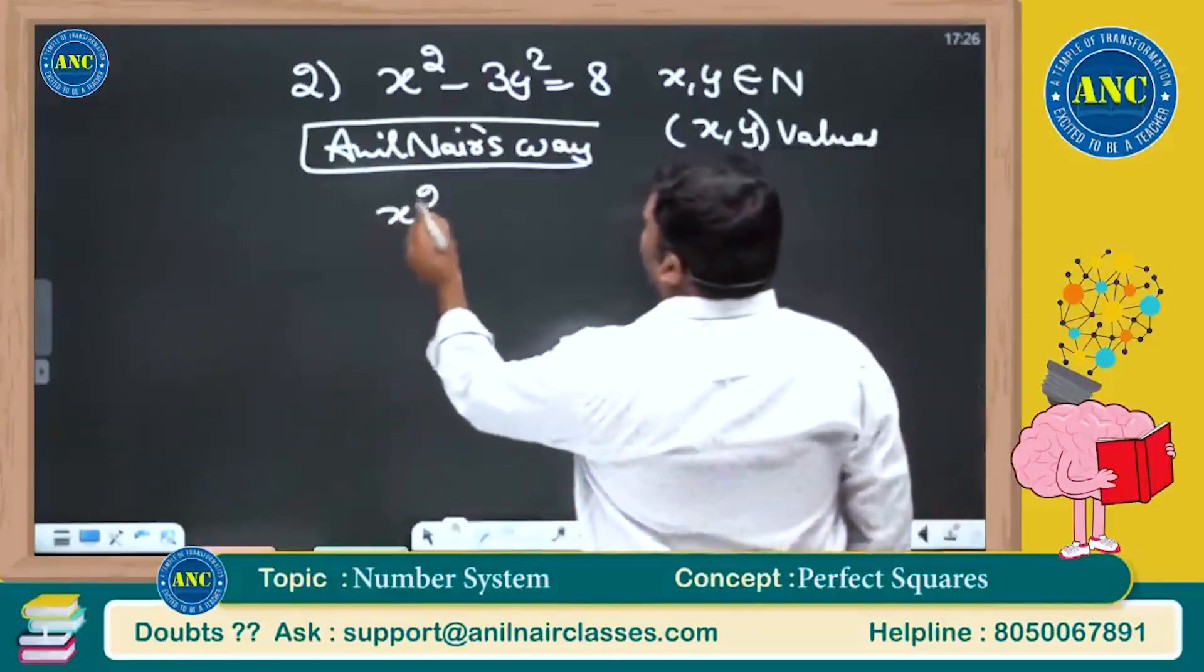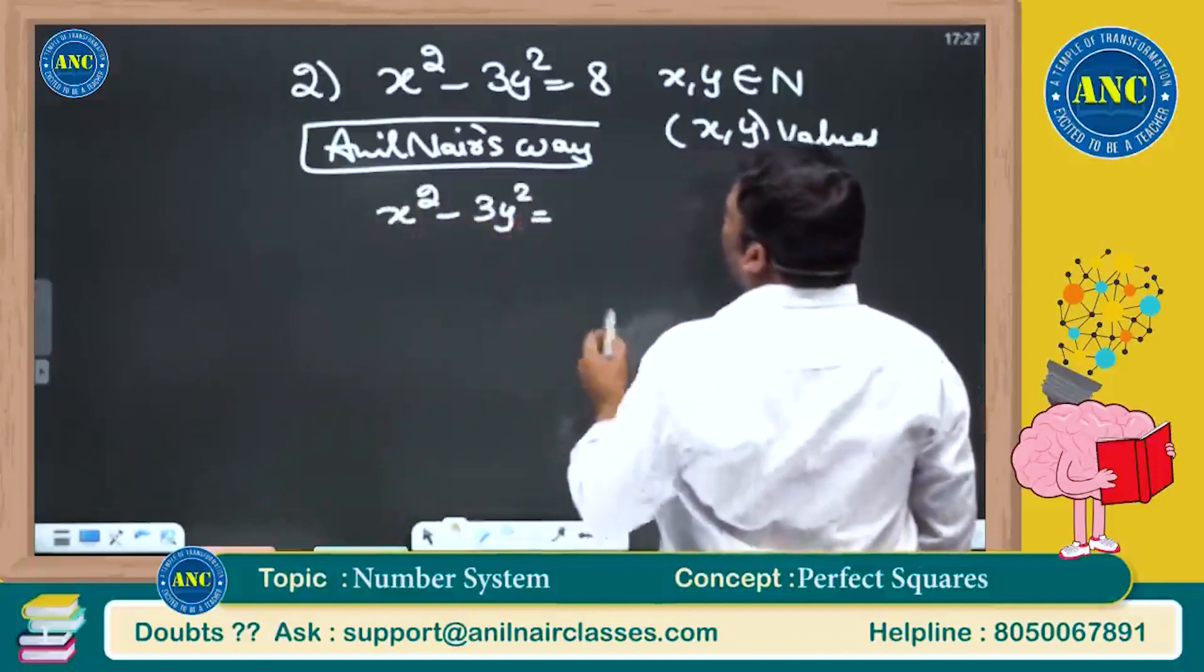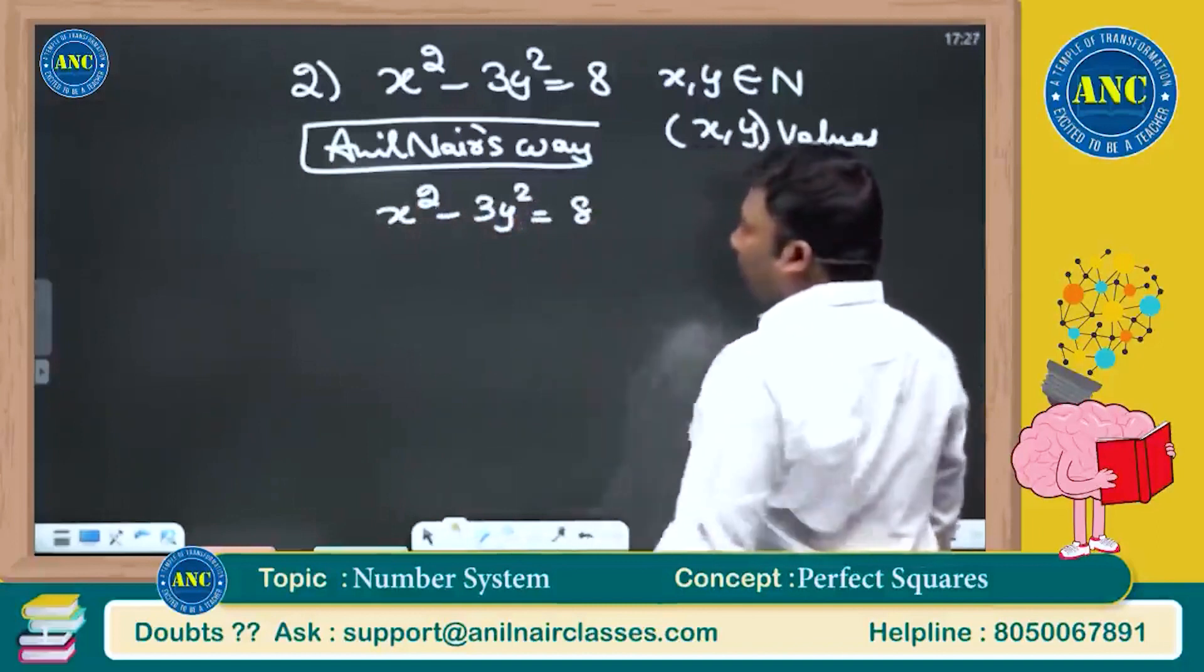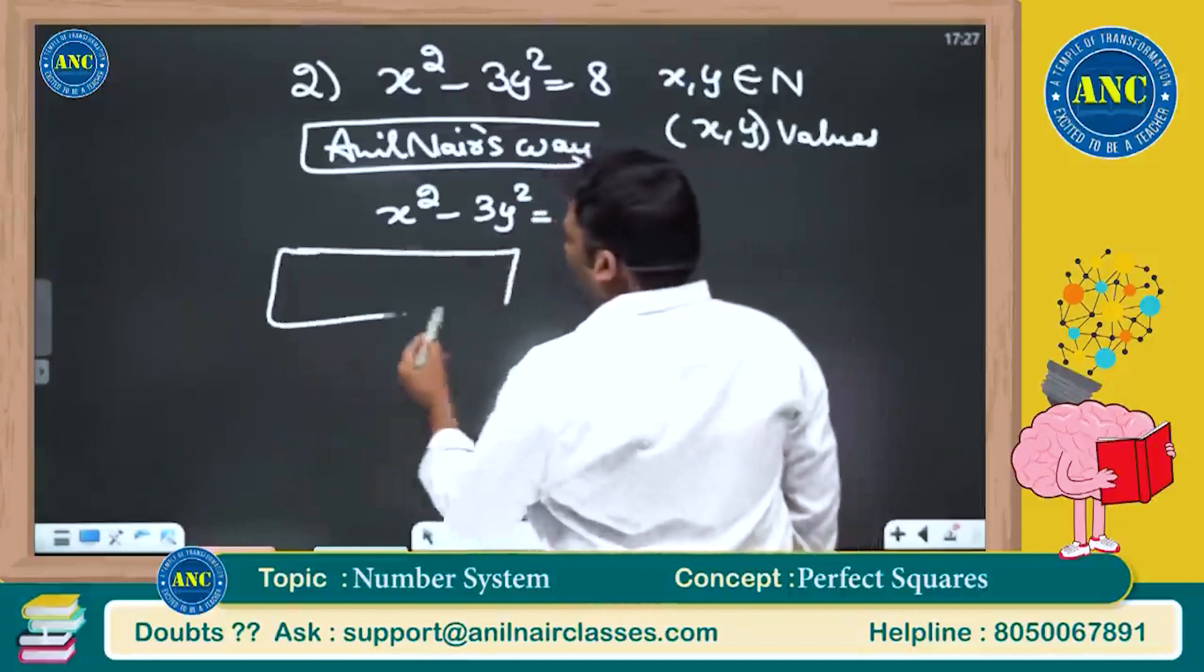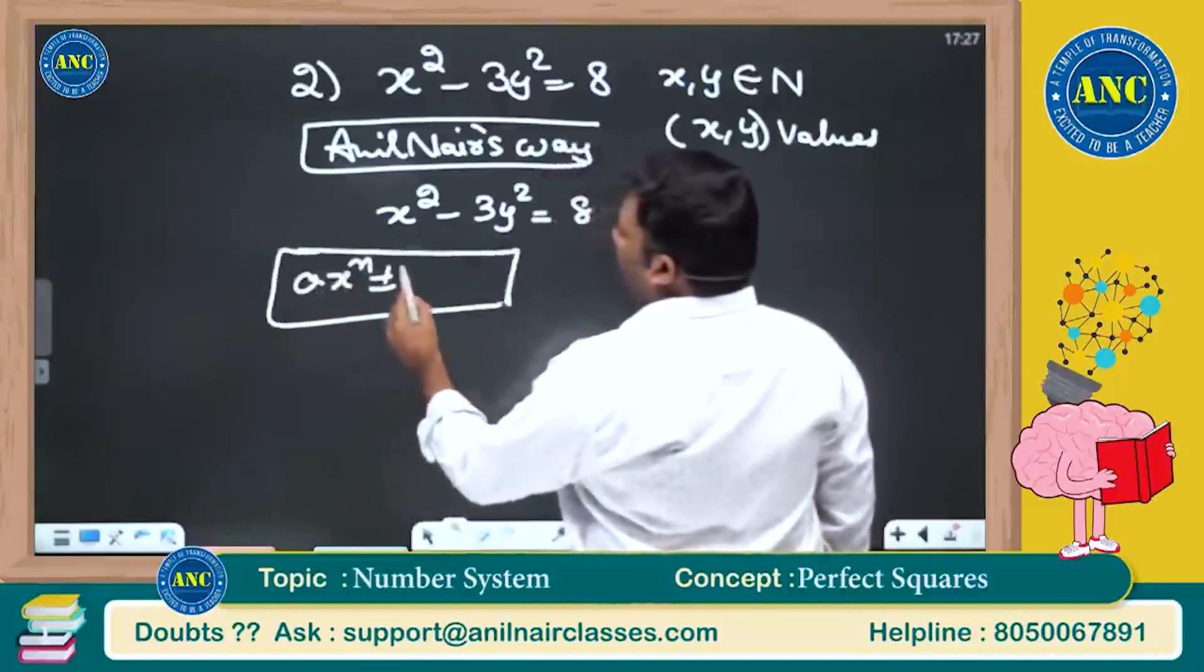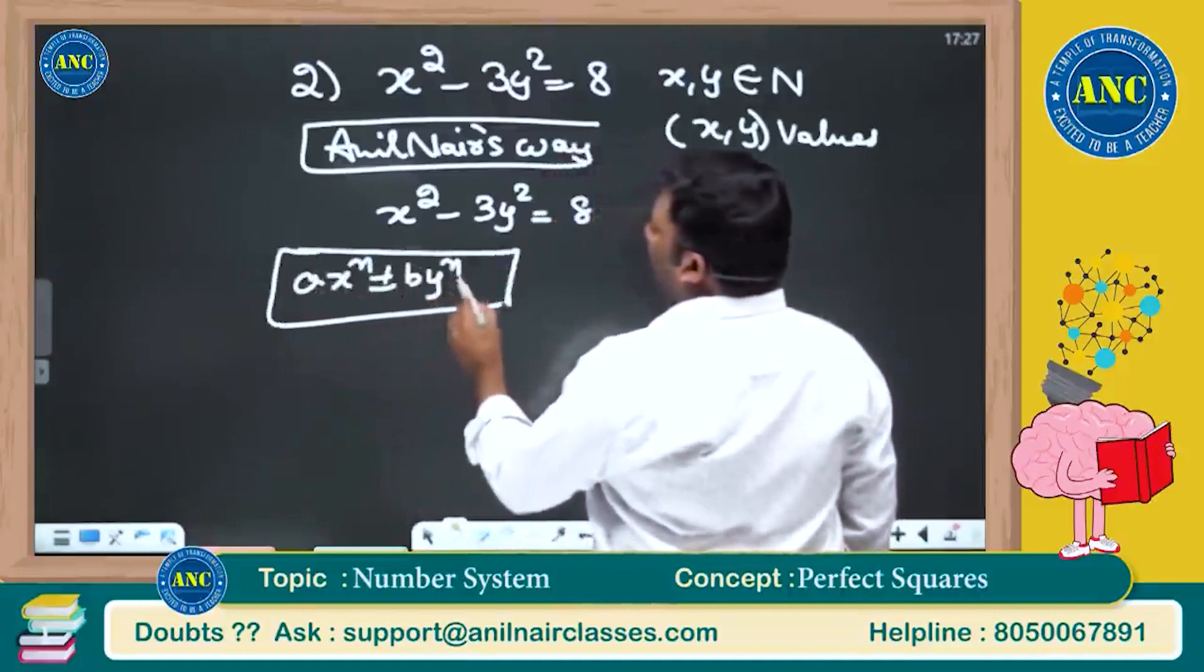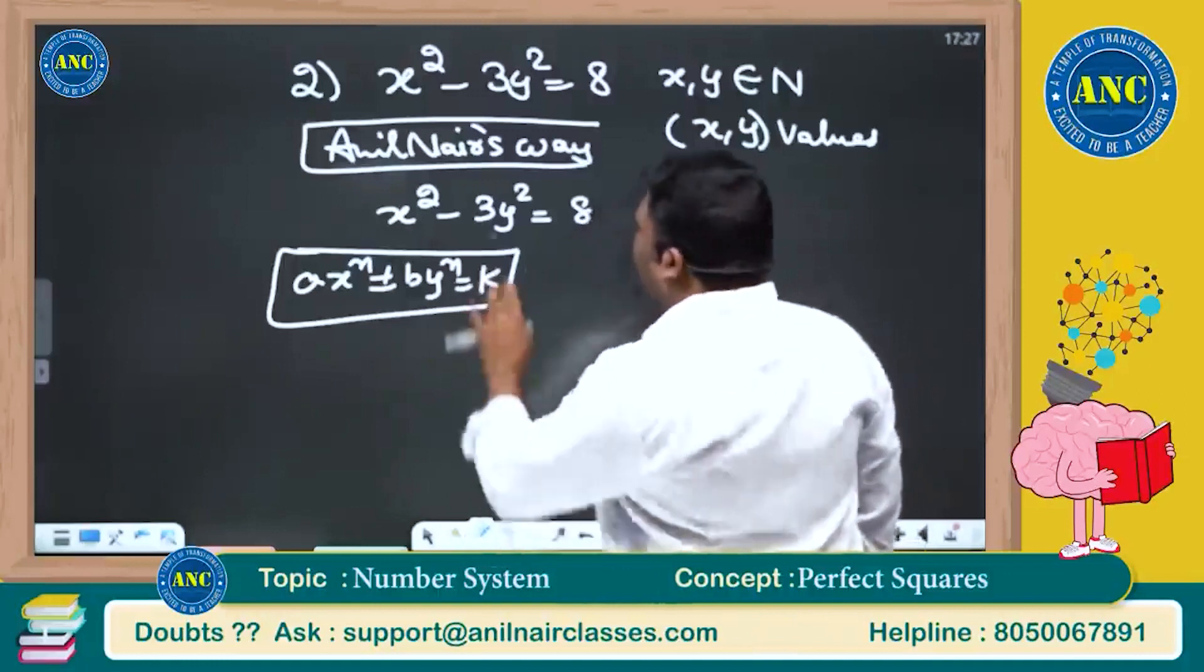x square minus 3y square equivalent to 8. Now before we discuss this concept, we are trying to find the questions which are of the form ax power n plus or minus by power n equivalent to k. Now before that, let me make it a little easy for you.